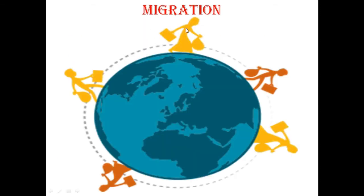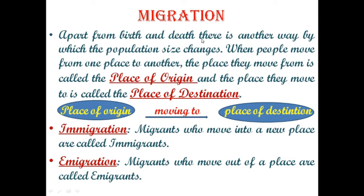Apart from birth and death, there is another factor by which the population size changes: migration. When people move from one place to another, the place from where they move is known as the place of origin, and the place they move to is called the place of destination. Let's understand through a diagram: this is the place of origin, and if a person moves to another place, that place becomes the place of destination.